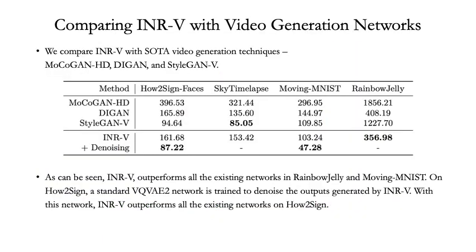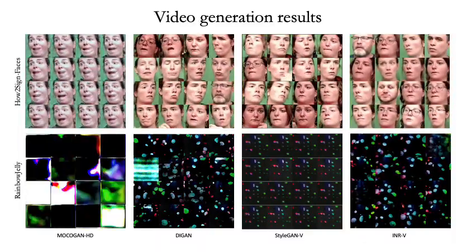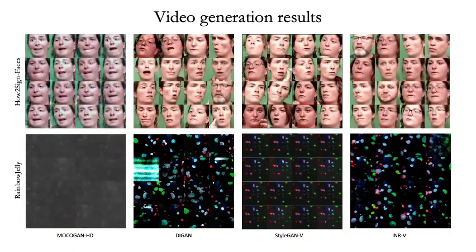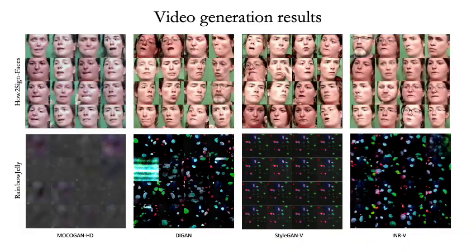Next, we evaluate random video generation. As shown, INRV outperforms all the existing networks in Rainbow Jelly and Moving MNIST. Using a simple denoising network as explained in the paper, INRV also outperforms all the networks in how-to sign faces. Here we show some qualitative results — as can be seen, INRV generates coherent videos with natural motion and content.